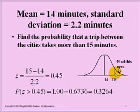We begin by computing our z-score. We use our formula. We take x, which is 15, and subtract our mean of 14 and divide that by the standard deviation. This gives us a z-score of 0.45.